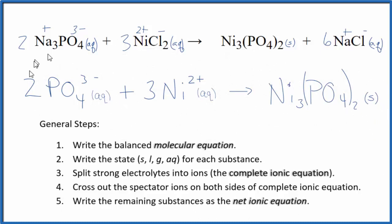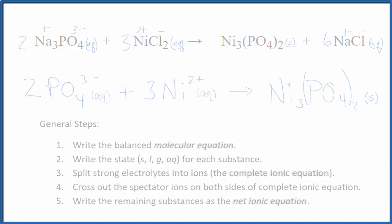So this is the balanced net ionic equation for sodium phosphate plus nickel 2 chloride. Our charge is conserved, and the number of atoms are conserved as well. This is a balanced net ionic equation, and this is Dr. B. Thanks for watching.